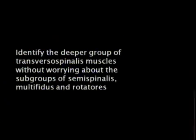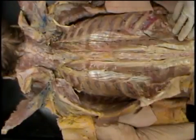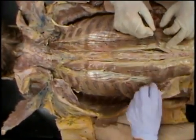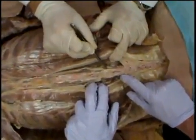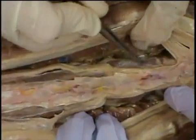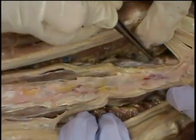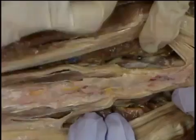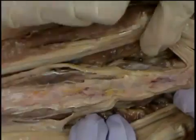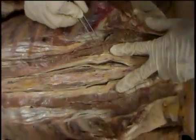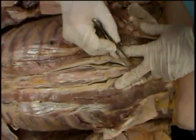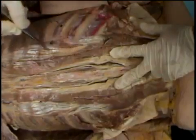In this stage, we're identifying the deeper group of transversospinalis muscles, and we're not going to worry about the subgroups. Panning down towards the multifidus region, you can see fibers running on the inside. Notice how the fibers run from the spinous processes out and down — together they form an inverted V. The erector spinae muscles by contrast run in a V formation, attaching to the spinous processes and running out laterally and up.